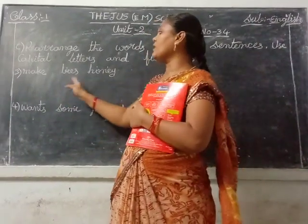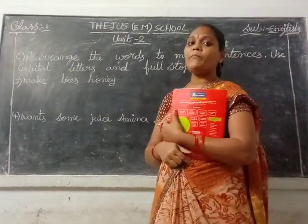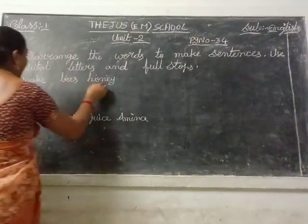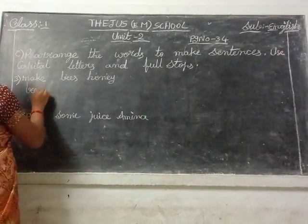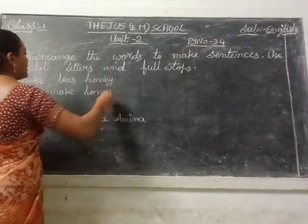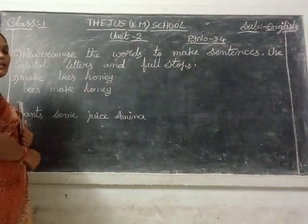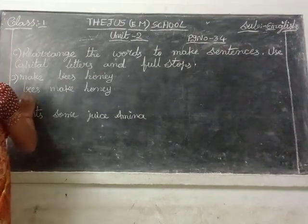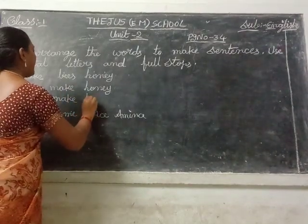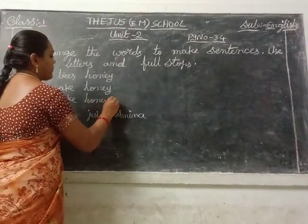See our next third one, children. 'Make bees honey.' What is that sentence? Make bees honey — is that the correct form? No. So we will rearrange the words the correct way. Bees make honey. So bees make honey — you write it in correct words. The sentence starts with capital letter, capital B: bees make honey. And here the sentence is completed, so we will put the full stop.